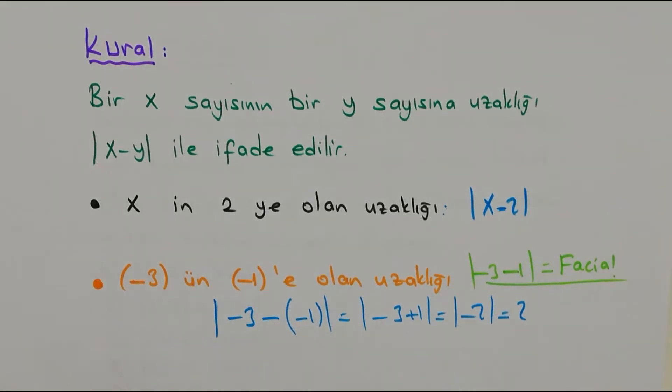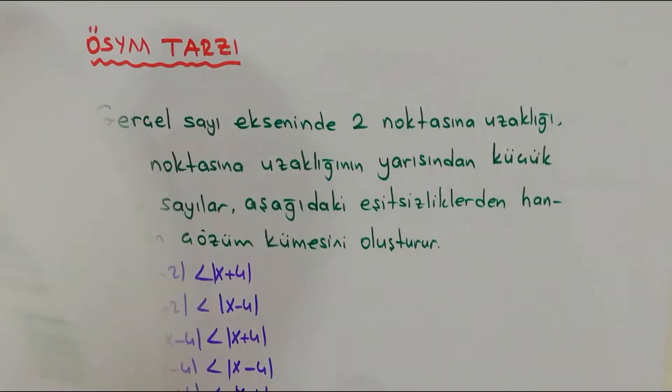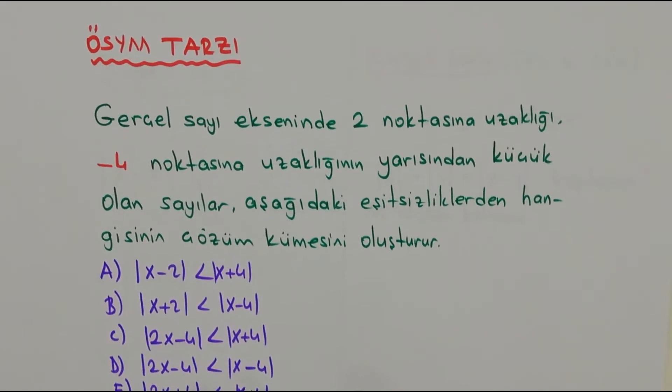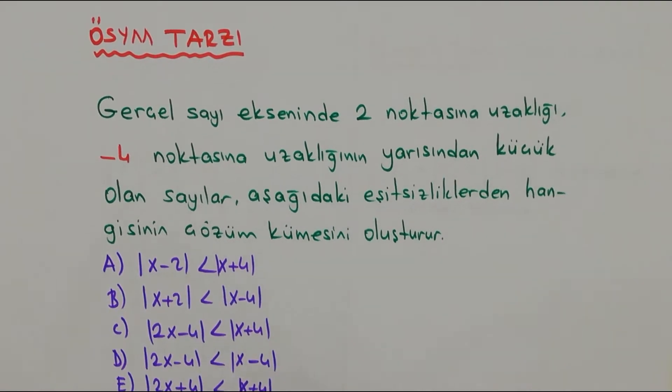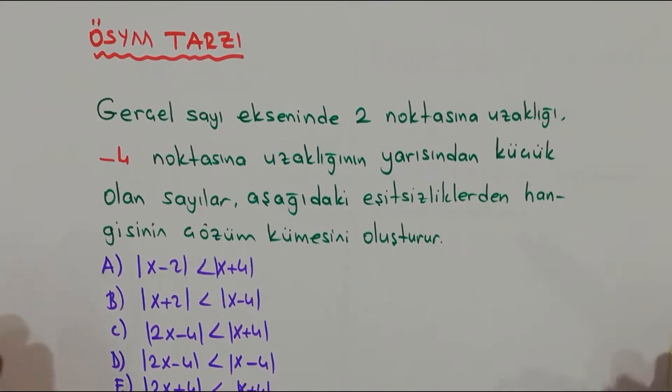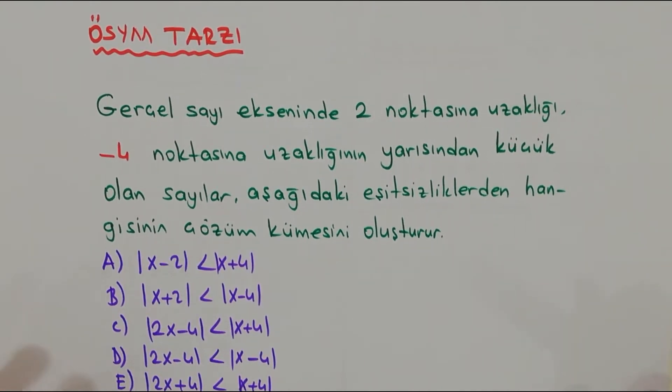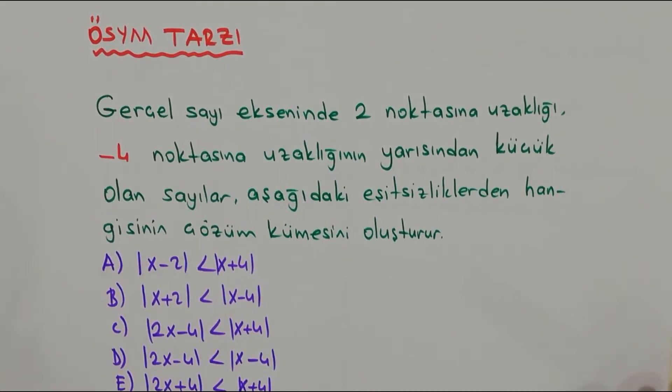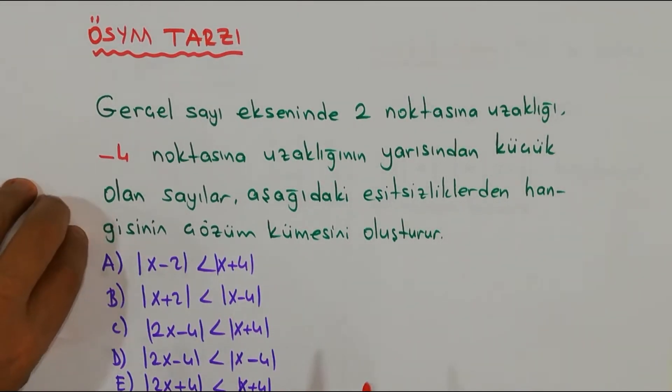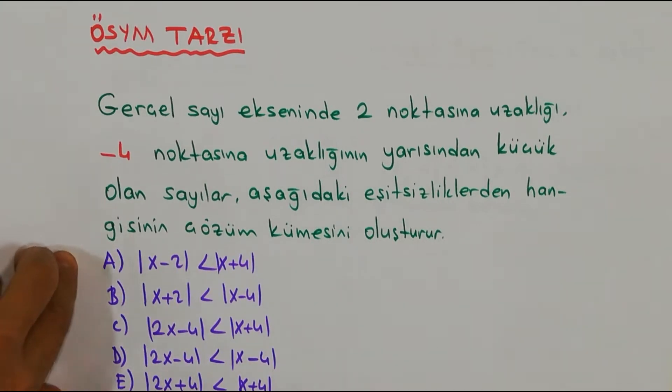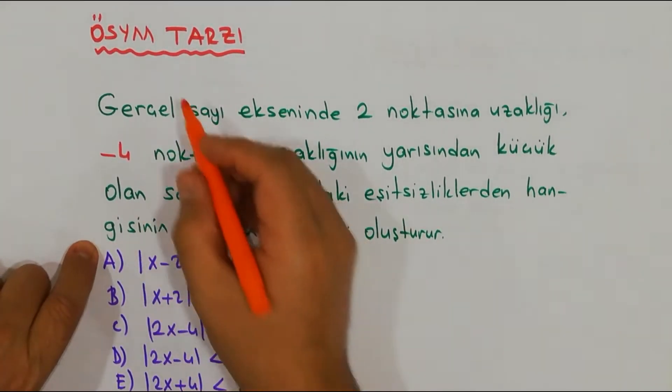Gelelim sınav tarzı bir soruya, ÖSYM'nin sorduğu soru tiplerinden bir tanesi arkadaşlar. Son zamanlarda yoruma böyle güzel ağırlık vermiş ÖSYM. Bakın diyor ki: Gerçek sayı ekseninde 2 noktasına olan uzaklığı, 4 noktasına olan uzaklığının yarısından küçük olan sayılar. Şıklara baktığımda hepsi x olduğu için ben sadece x ile ilgili işlem yapacağım arkadaşlar.